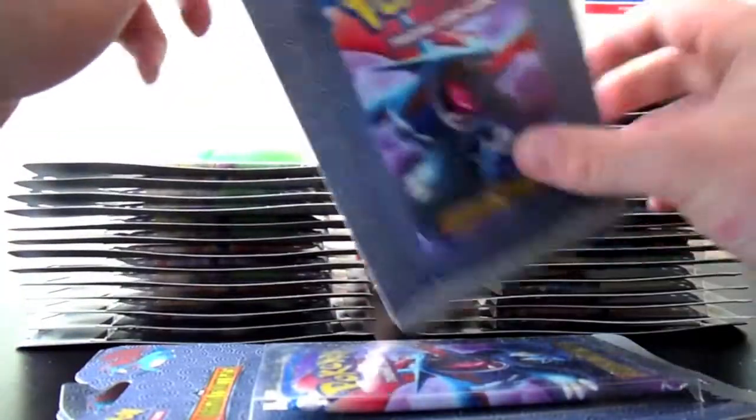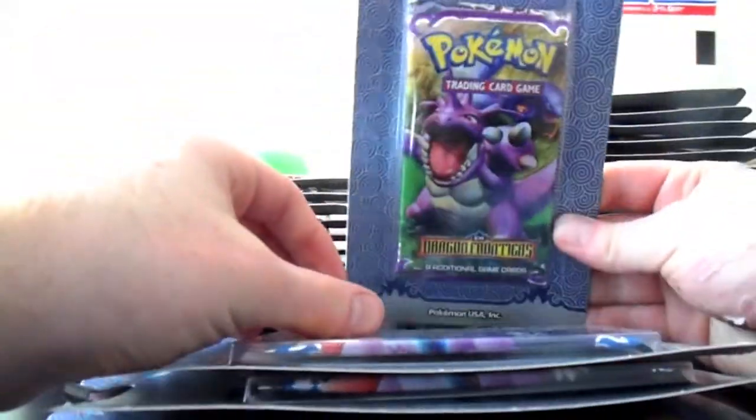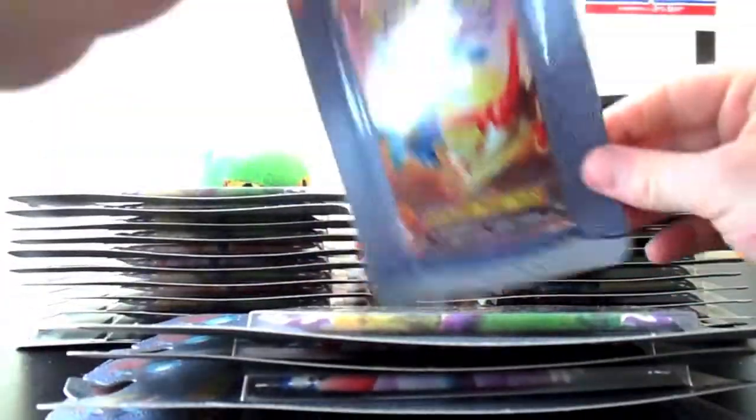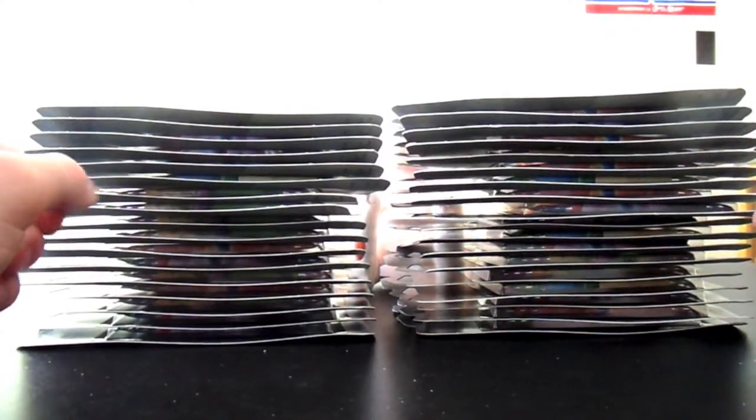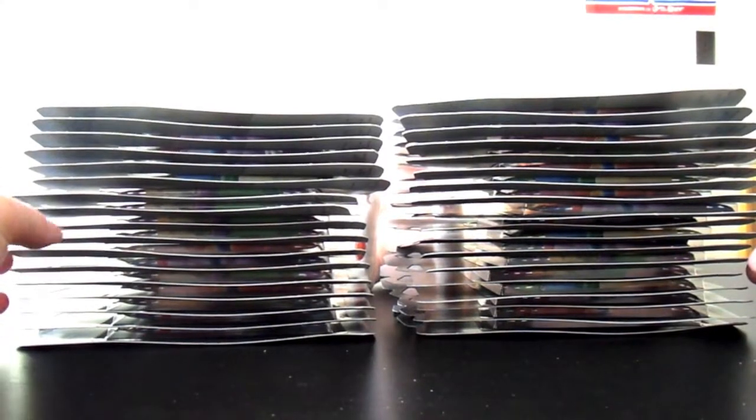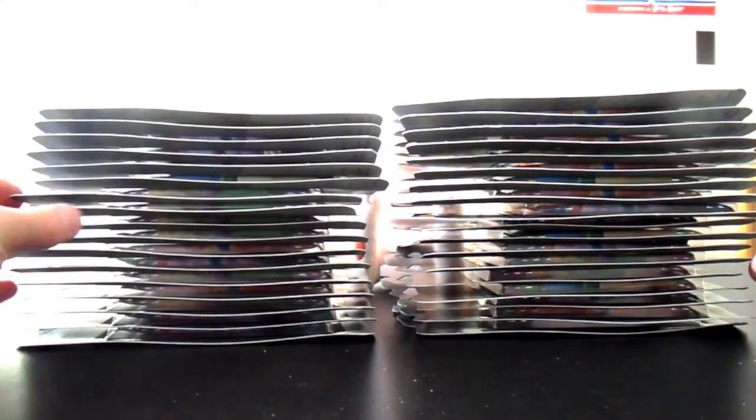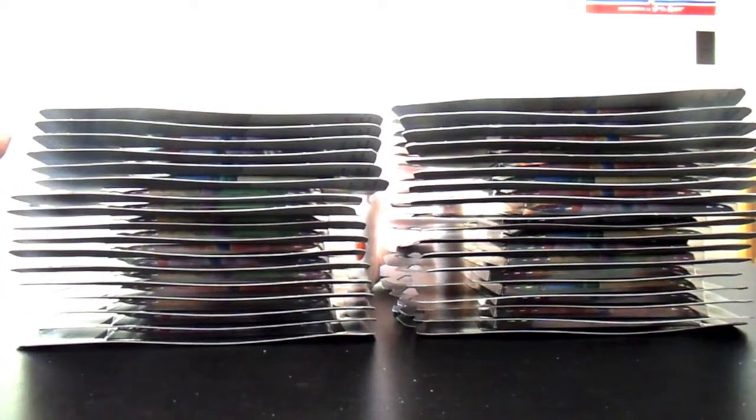There's a Tyranitar pack. So I'm going to open all these off-camera so it doesn't take forever. There's a Nidoking and Arbok, and Latios and Latias. So I'll open all these off-camera so it doesn't take forever to get these blisters open. And hopefully we can pull something pretty neat. Dragon Frontiers is probably one of the best EX sets to come out. Getting hands on sealed packs is pretty hard, but you've got to treat yourself sometimes.